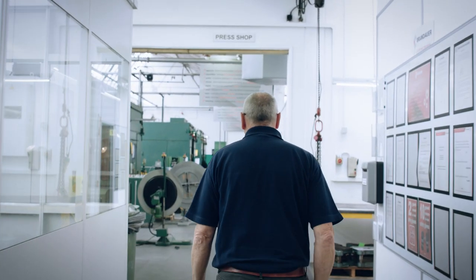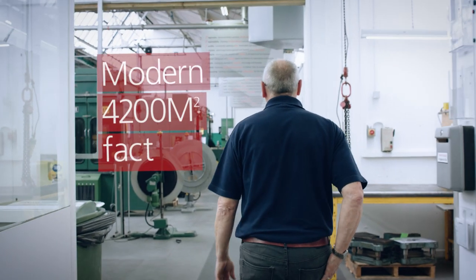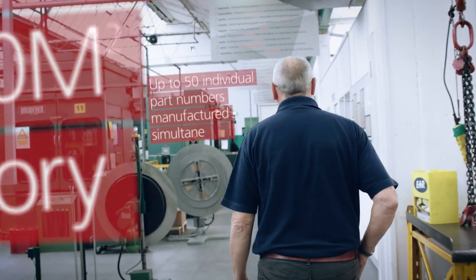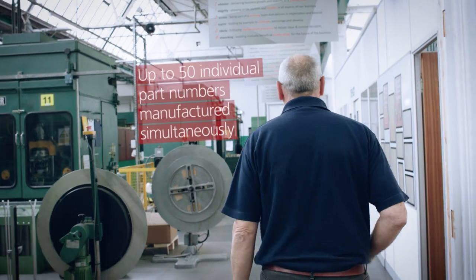Our modern 4200 square metre factory means we can be flexible. We can manufacture up to 50 bespoke part numbers simultaneously. Which means we can offer quick turnaround of jobs for all our customers.